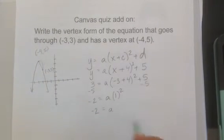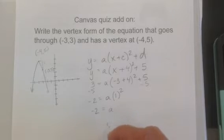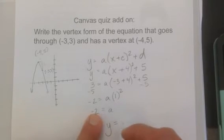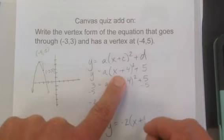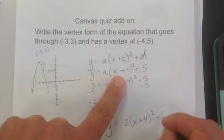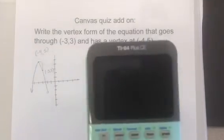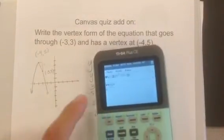So I can write my vertex formula equation now: y equals negative 2 times x plus 4 squared plus 5. And it would be really easy for me to check it on here, which I'm gonna do.